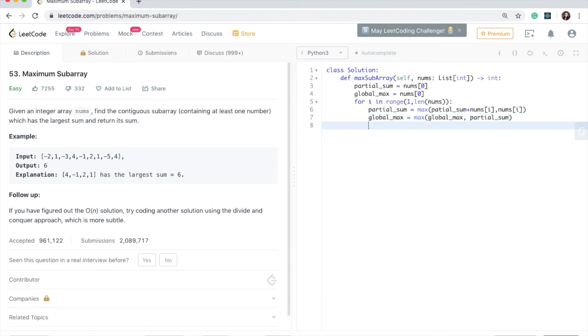Okay, and this will just give me the global max of the previous max or the partial sum at each position. And then what I need to do is return the global max.